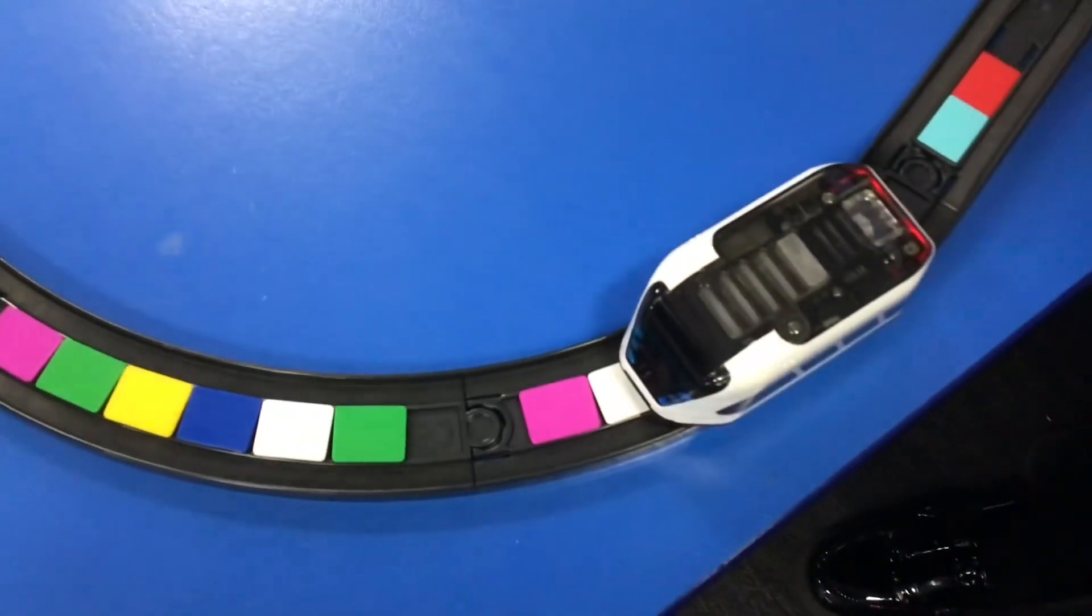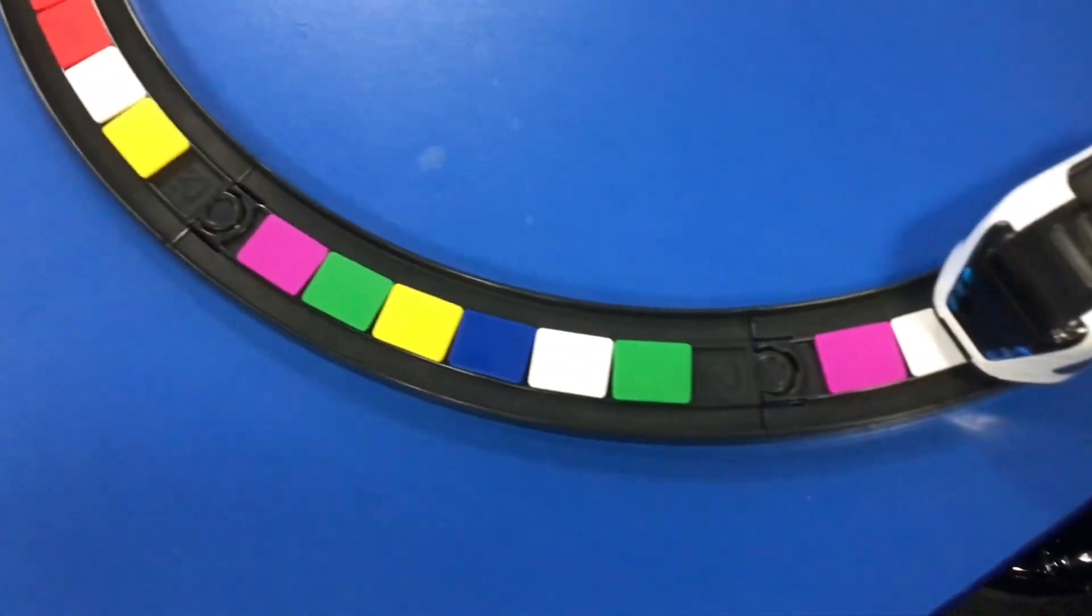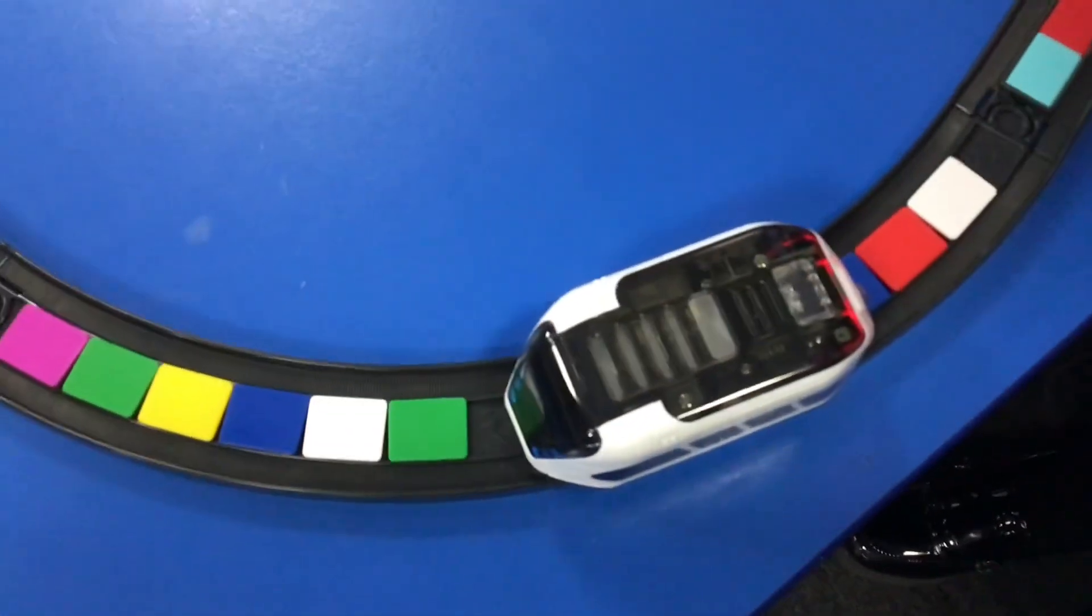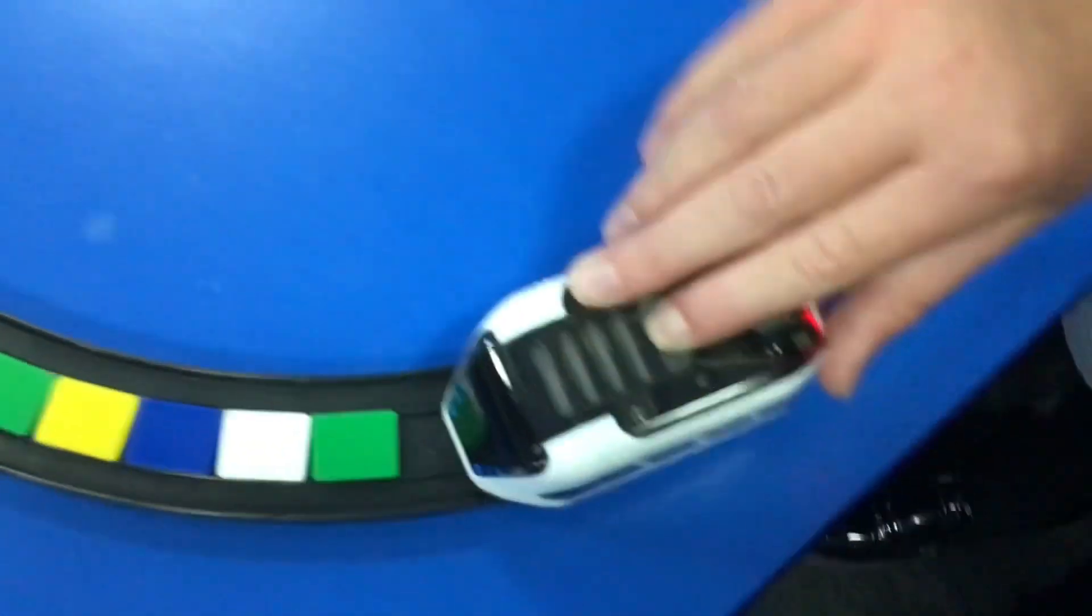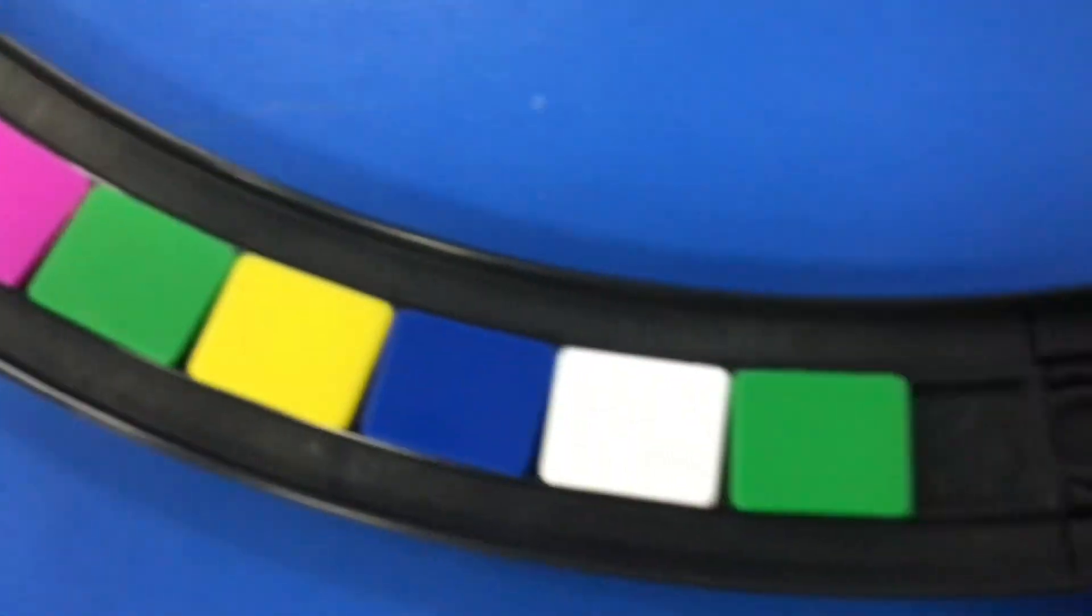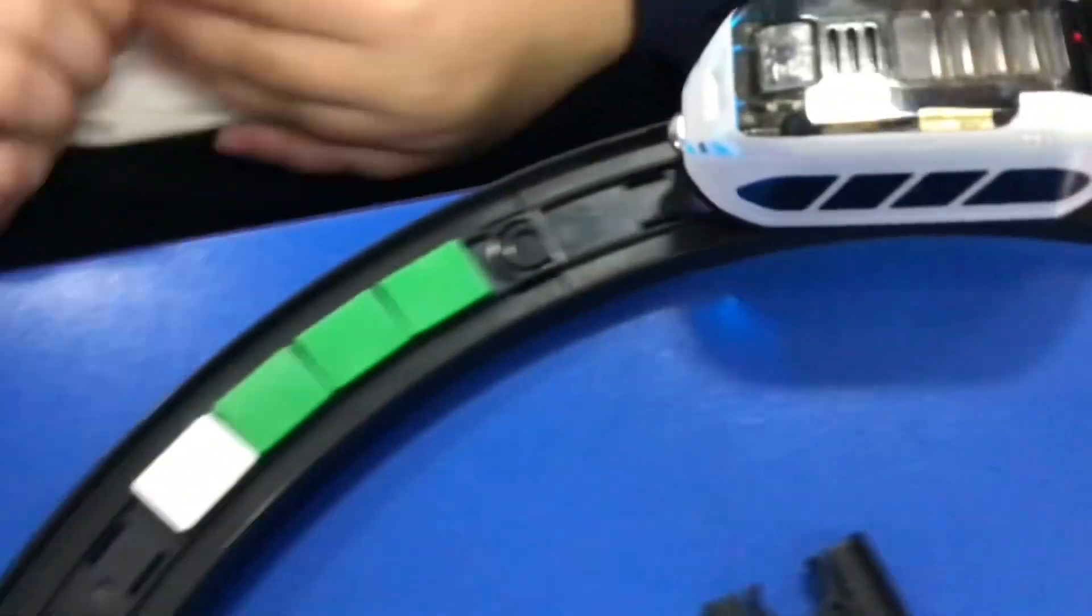Just press the button at the top for me, that one there, that's it. And then we'll check blue and white. Yeah we've got a blue and a white here so it changed direction and now it's going through the tunnel.